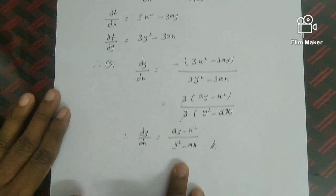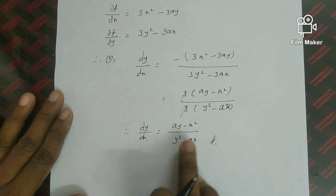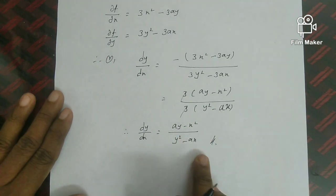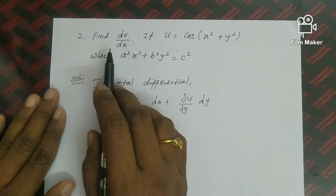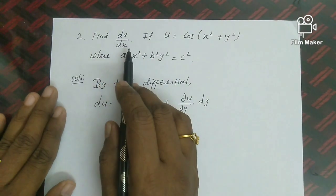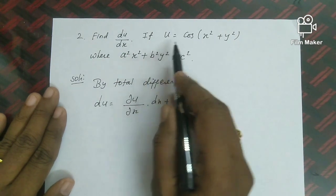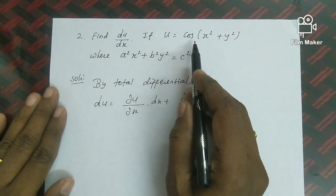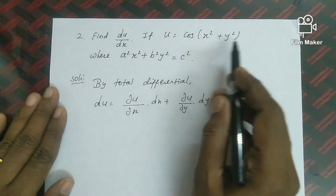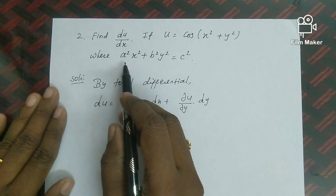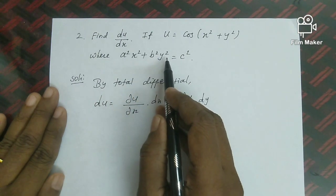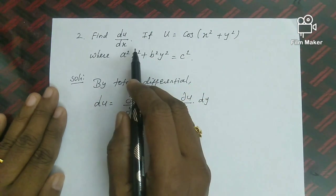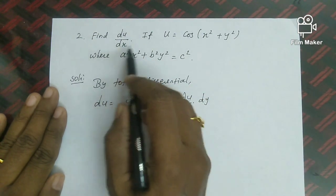After finding ∂f/∂x and ∂f/∂y and substituting into the formula, we get dy/dx. So by using the implicit differentiation formula, dy/dx has been found. Next question: Find du/dx if u = cos(x² + y²), where a²x² + b²y² = c².